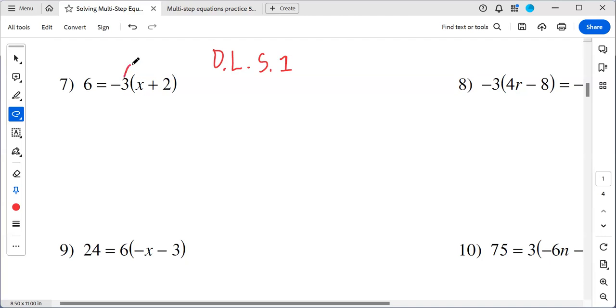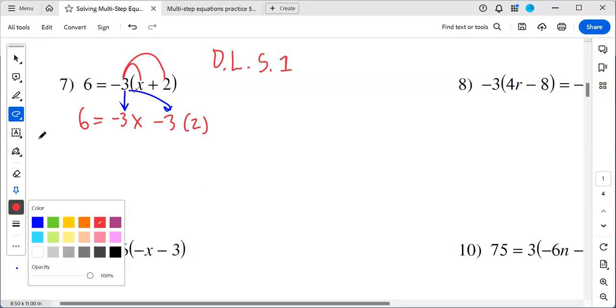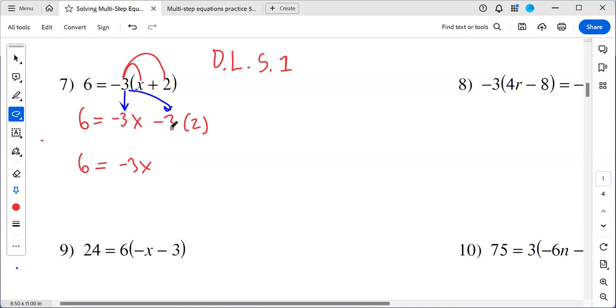So that means the negative three is going to be multiplied by the X, and the negative three is going to be multiplied by the positive two. So we're going to bring down the six, and then we're going to have negative three X, then we're going to have also negative three times positive two. To emphasize what's going on there, this same negative three is going to multiply here and here, and then the X comes down and the two comes down. So from here, let's see what happens. Still bring down our six, our negative three X remains as is, and then negative three times two is going to give us minus six.